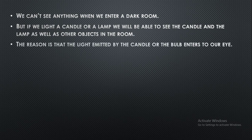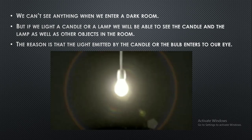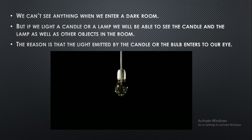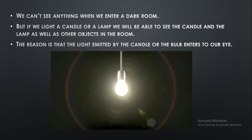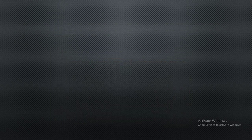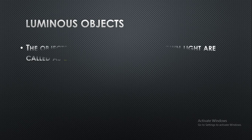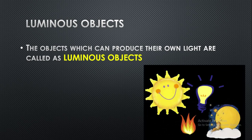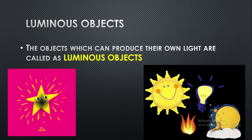The reason is that the light emitted by the candle or the bulb enters our eye. Earlier it is dark, but when the bulb is on it will emit light, and because of that light we can see things. Objects which can produce their own light are called luminous objects.